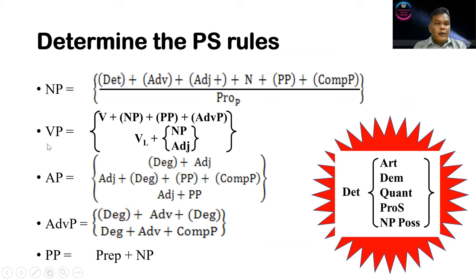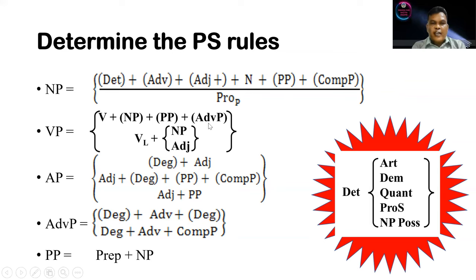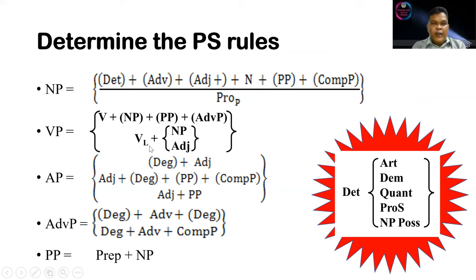The PS rules of a verb phrase include verb as the main element, and the verb can be accompanied by noun phrase, prepositional phrase, and adverb phrase. The other PS rule of verb phrase is that it can also be composed of a linking verb, symbolized by VL, and this linking verb can be followed by either a noun phrase or an adjective.